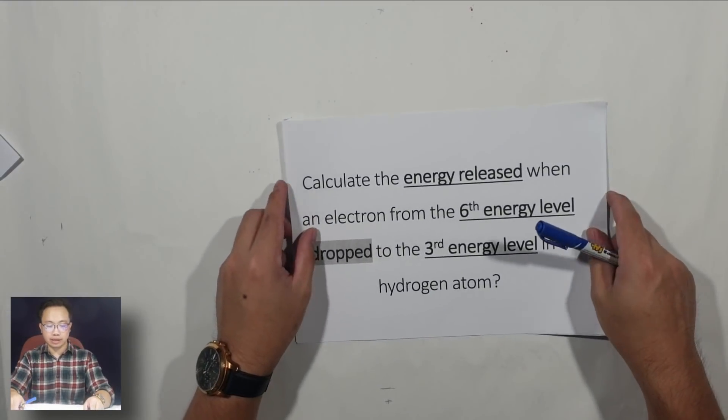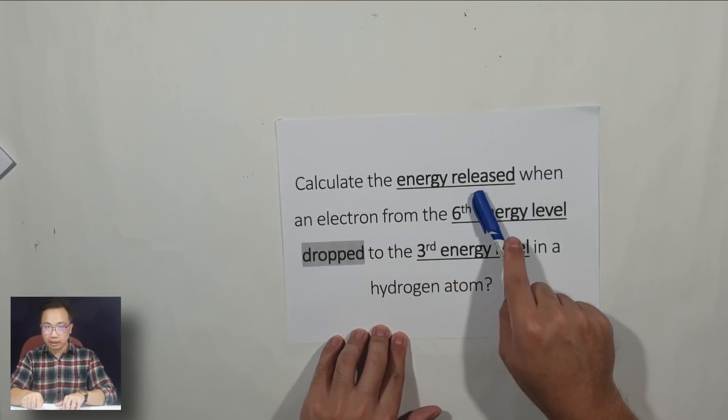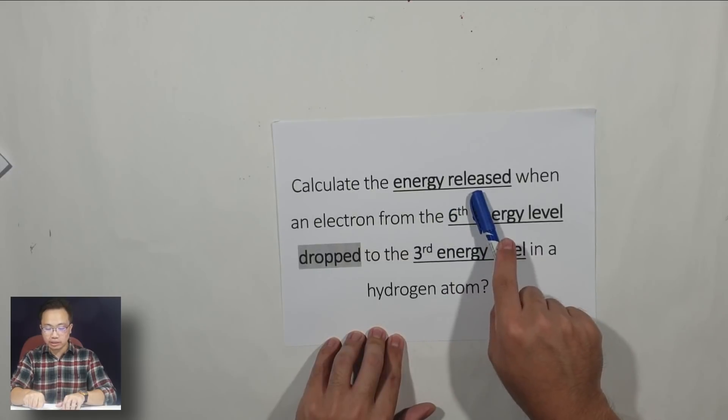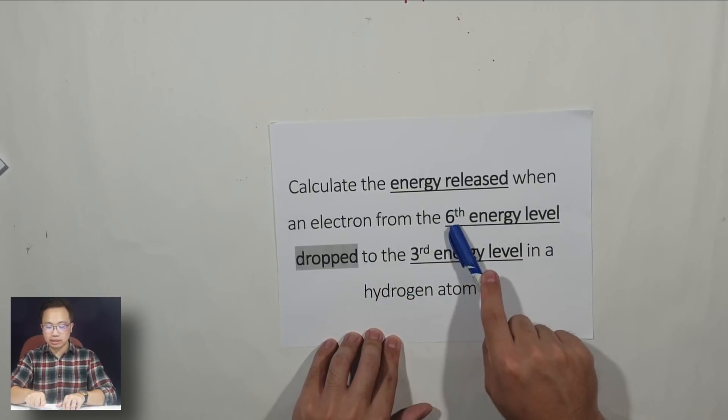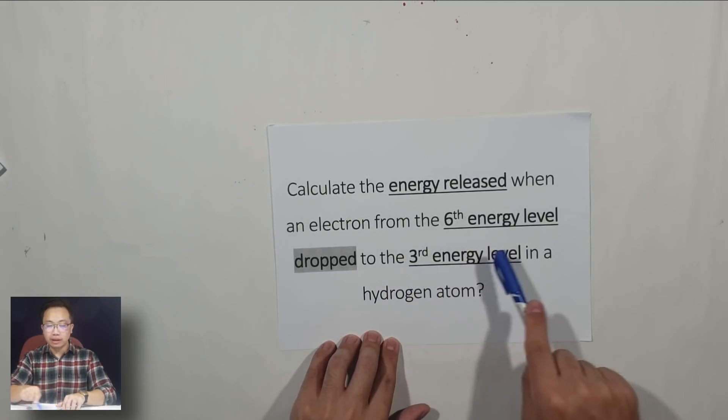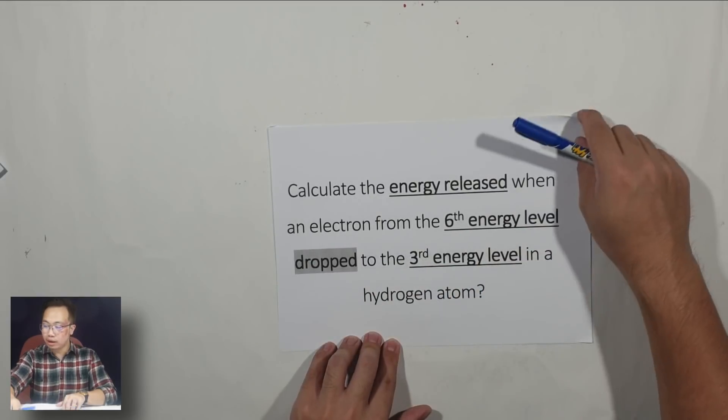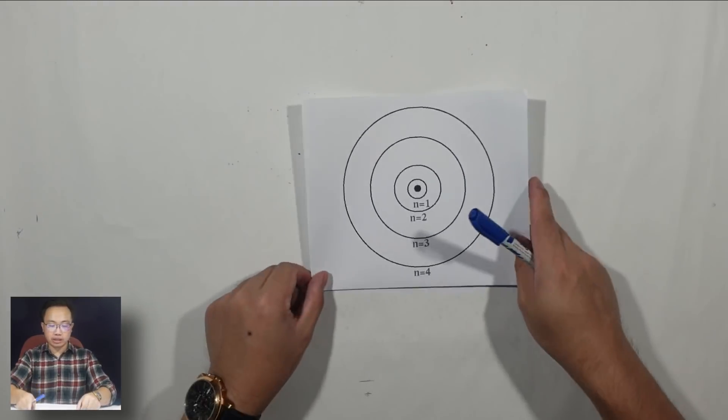We're going to look at one example. The question I have for you is this: Calculate the energy released when one electron from the sixth energy level drops to the third energy level in a hydrogen atom. How are we going to do this?